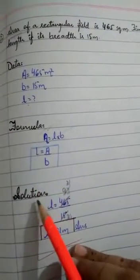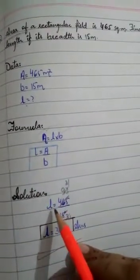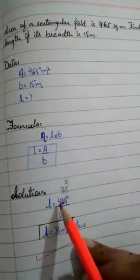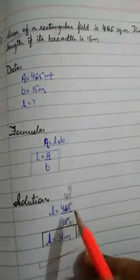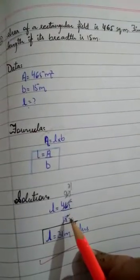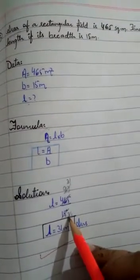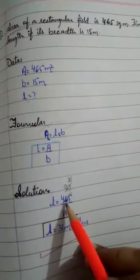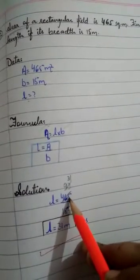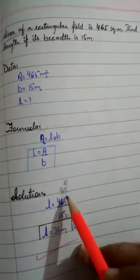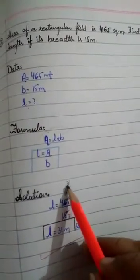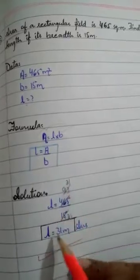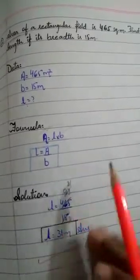As usual, solution heading. L equals area, we have 465 divided by 15. Now this is cancelled from the table. 5 times 3 is 15. 5 times 9 is 45. 1 is carried over here. 15, 5 times 3 is 15. 3 times 1 is 3. 3 times 3 is 9. 3 times 1 is 3. So length we have is 31 meters.